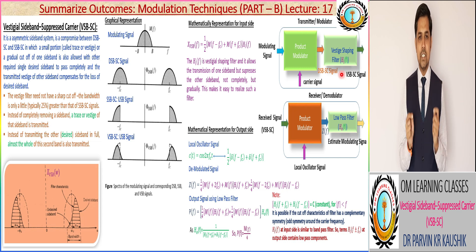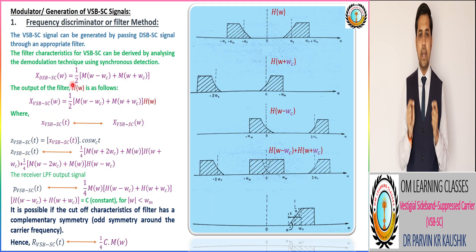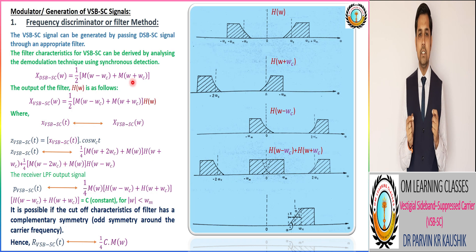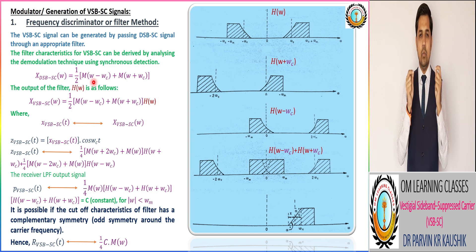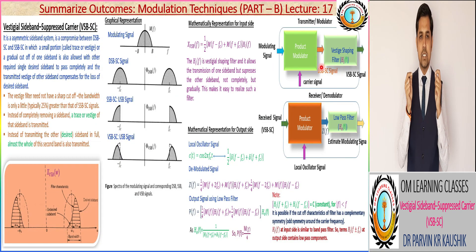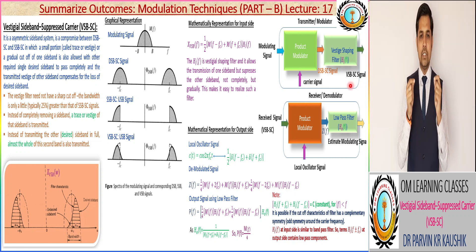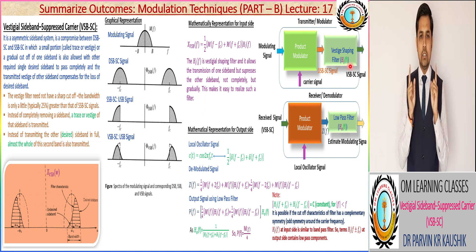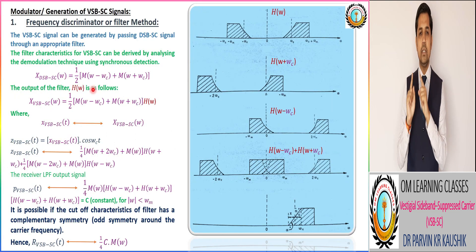The output of that modulator is the DSBSC signal, which has a representation in the frequency domain equivalent to (1/2)[M(ω - ωc) + M(ω + ωc)], where M(ω) corresponds to the modulating signal and ωc corresponds to the carrier signal. This DSBSC signal is then passed through an appropriate filter with transfer function H(ω).